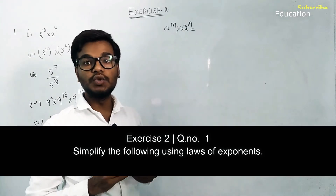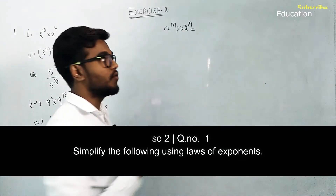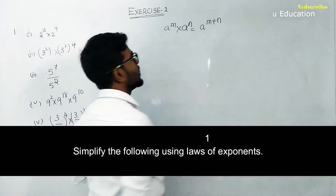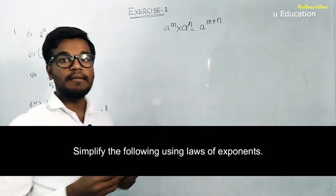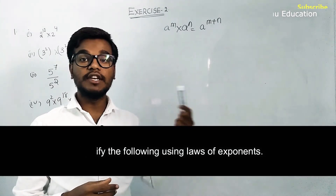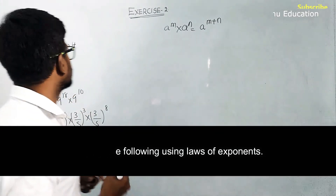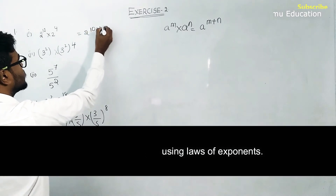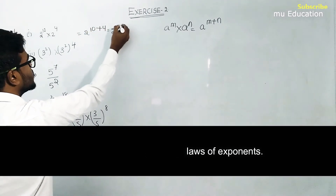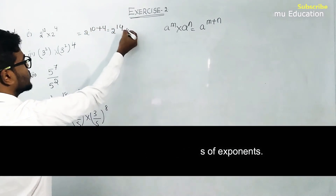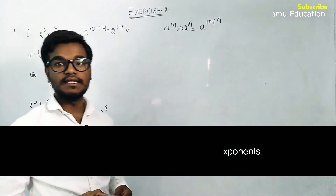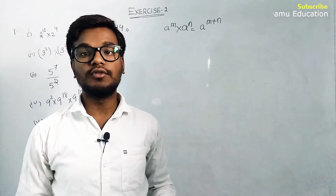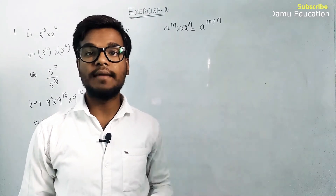When bases are same, we add the powers: a power m plus n. So here 2 power 10 plus 4 equals 2 power 14. That is the answer for the first question.